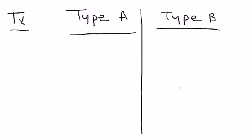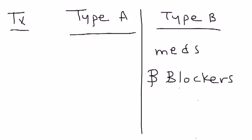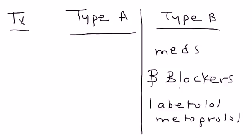So let's say you did the imaging, you did the transesophageal echocardiogram, and you found that it was type B. For type B, the mainstay of treatment is medications, and in particular, beta blockers. Your options include labetalol, metoprolol. Those are the medications that you use in type B.